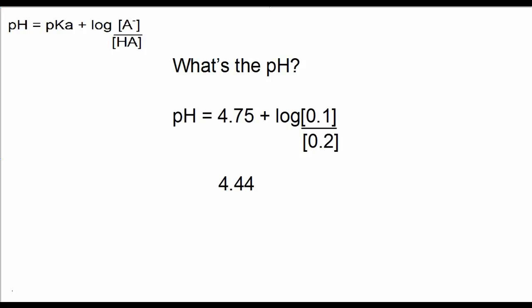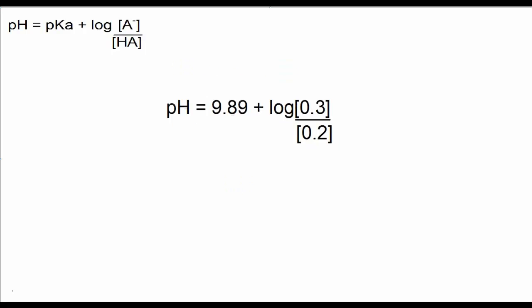I have a couple more for you to try. In this case, the pKa is 9.89. We have slightly more conjugate base than acid. So, what's your prediction? First, if it's going to be greater than or less than 9.89, and then actually determine the pH using the calculator. Pause the video and then come back and check your answer.